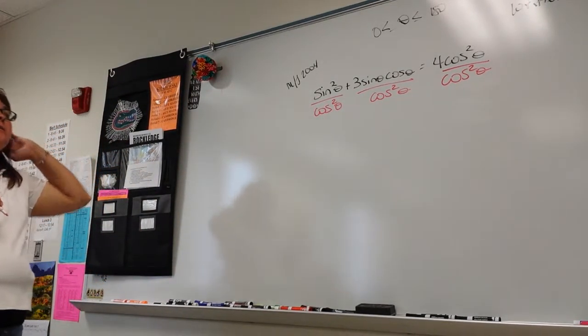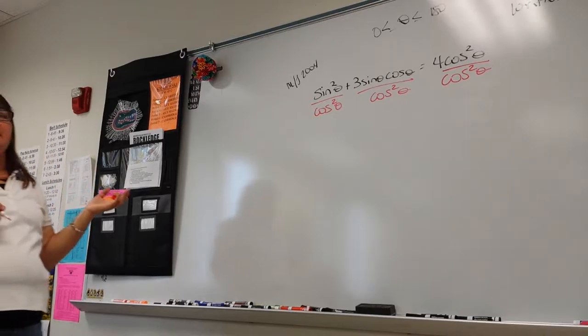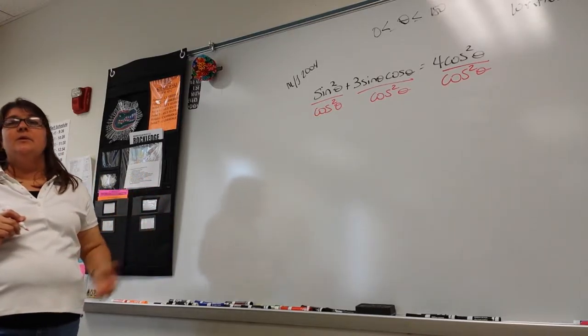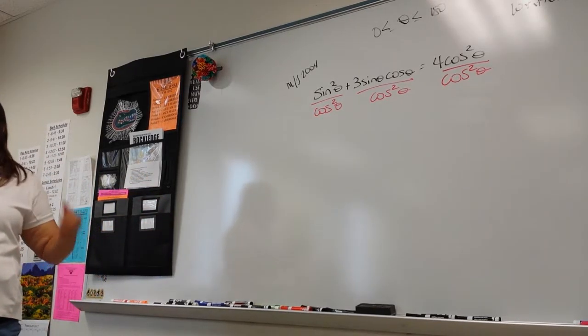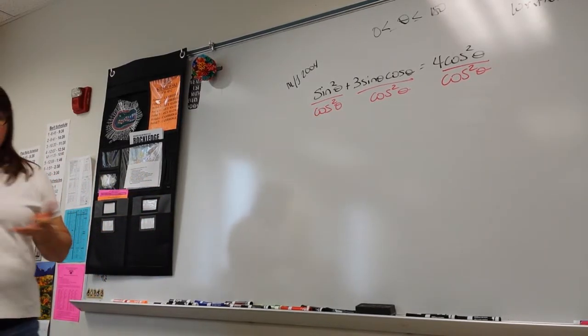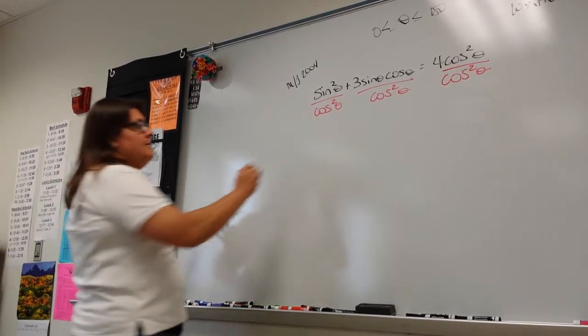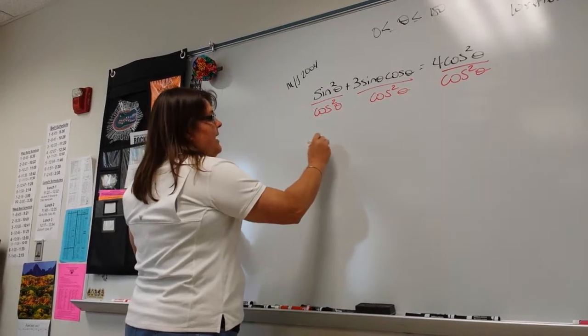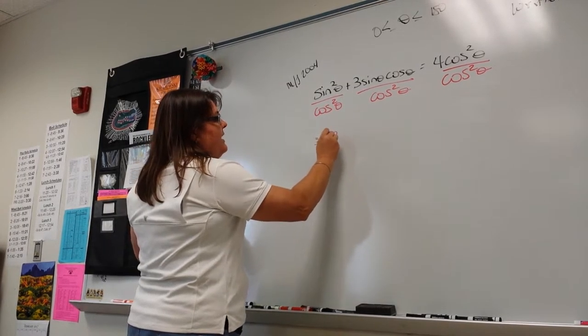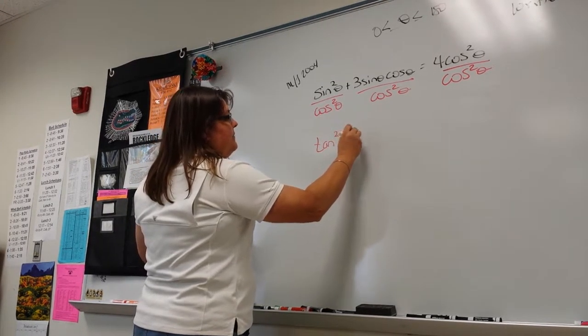Over here, the very left thing: sine squared over cosine squared is tangent squared theta. So I now know I have tan squared theta.